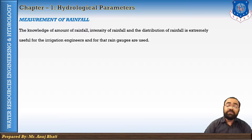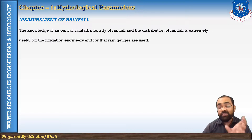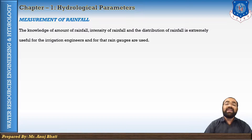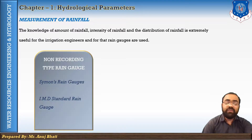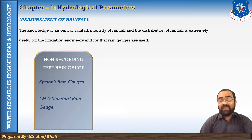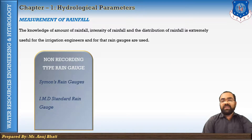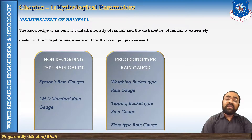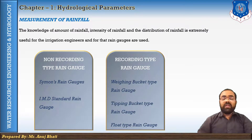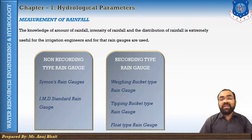Rainfall at a particular place can be measured by a particular instrument known as the rain gauge. This rainfall is usually measured in centimeters. We have two different types of non-recording rain gauges: Simon's rain gauge and the IMD (Indian Meteorological Department) standard rain gauge. The next type is the recording rain gauge, which includes the weighing bucket type, tipping bucket type, and float type rain gauge.